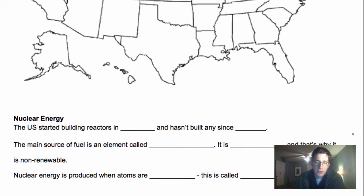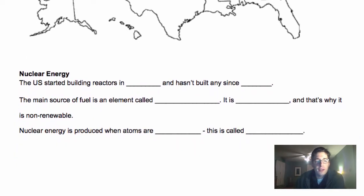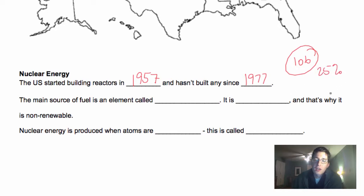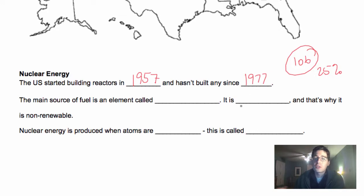The other natural resource we're going to take a look at is nuclear energy. A little bit of history first: the United States started building reactors in 1957. This was after World War II, after the atomic bomb. We decided we could harness nuclear energy to create power, but we haven't built any since 1977. Currently there are about 106 reactors in the United States, and these produce 25% of the nuclear power globally. But our nuclear plants are starting to wear down and wear out, and we have to figure out what to do about that.